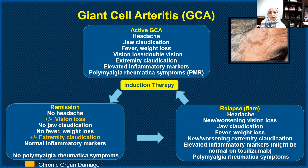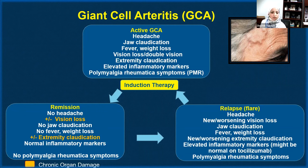After induction therapy, we reassess GCA patients. In remission, we expect them not to have temporal headaches, jaw claudication, fever, or weight loss, and we expect normal inflammatory markers and no polymyalgia symptoms. However, they may continue to have vision loss and arm and leg claudication during activities even during remission — this is what we call chronic organ damage, which could be irreversible with induction therapy.